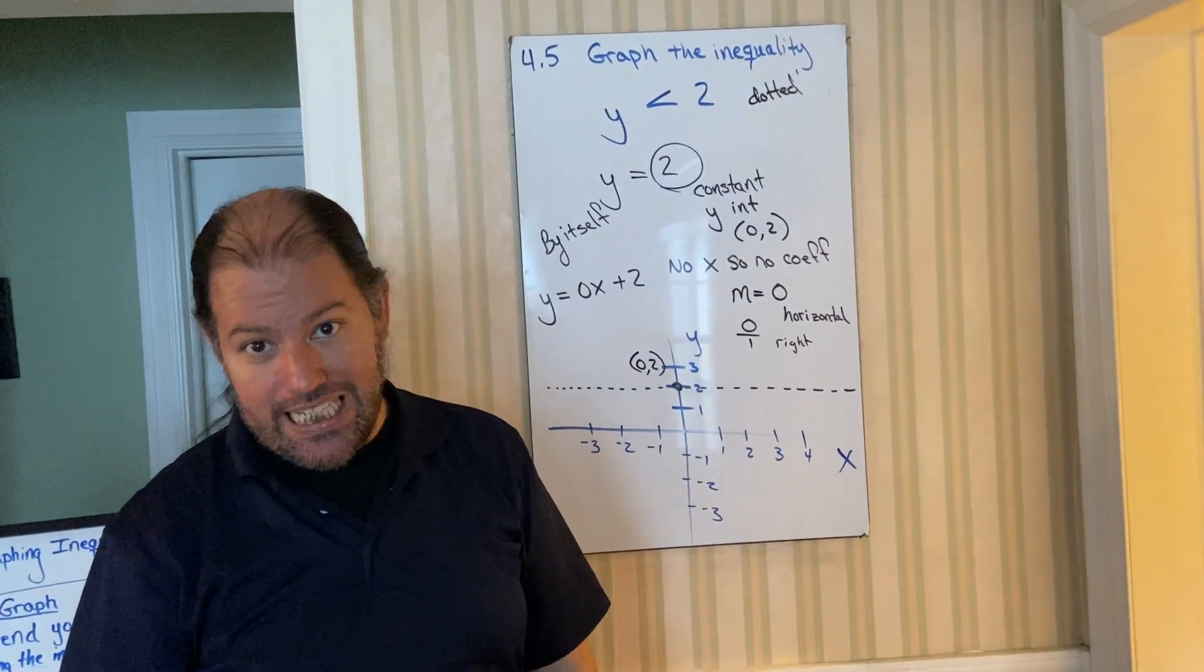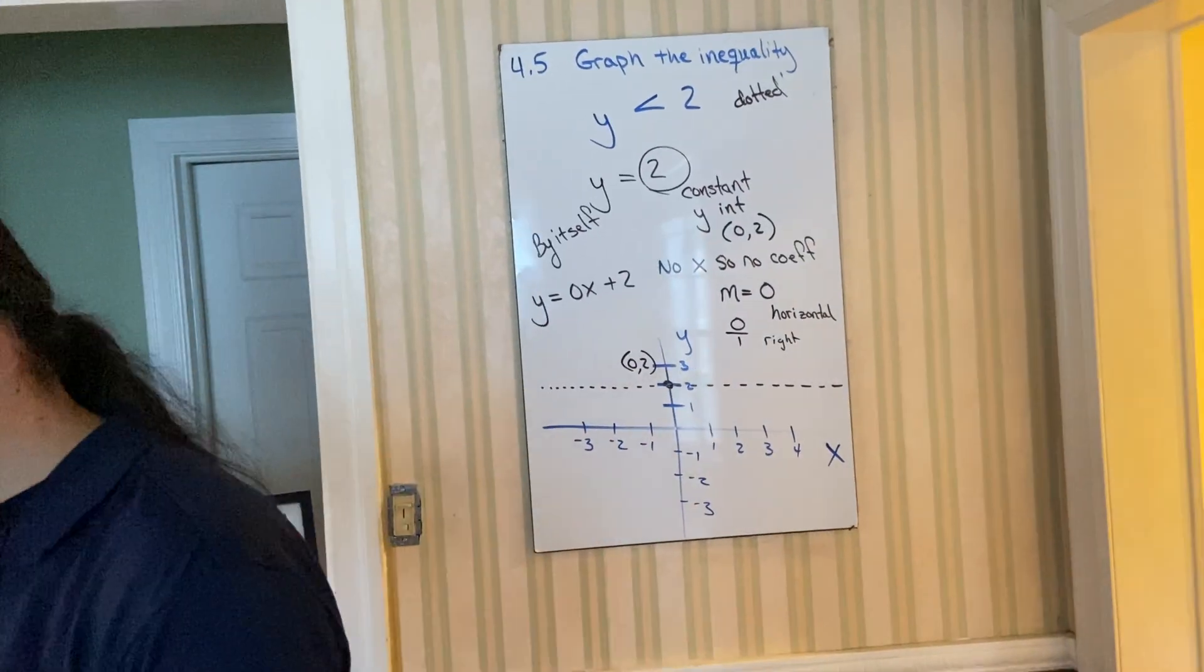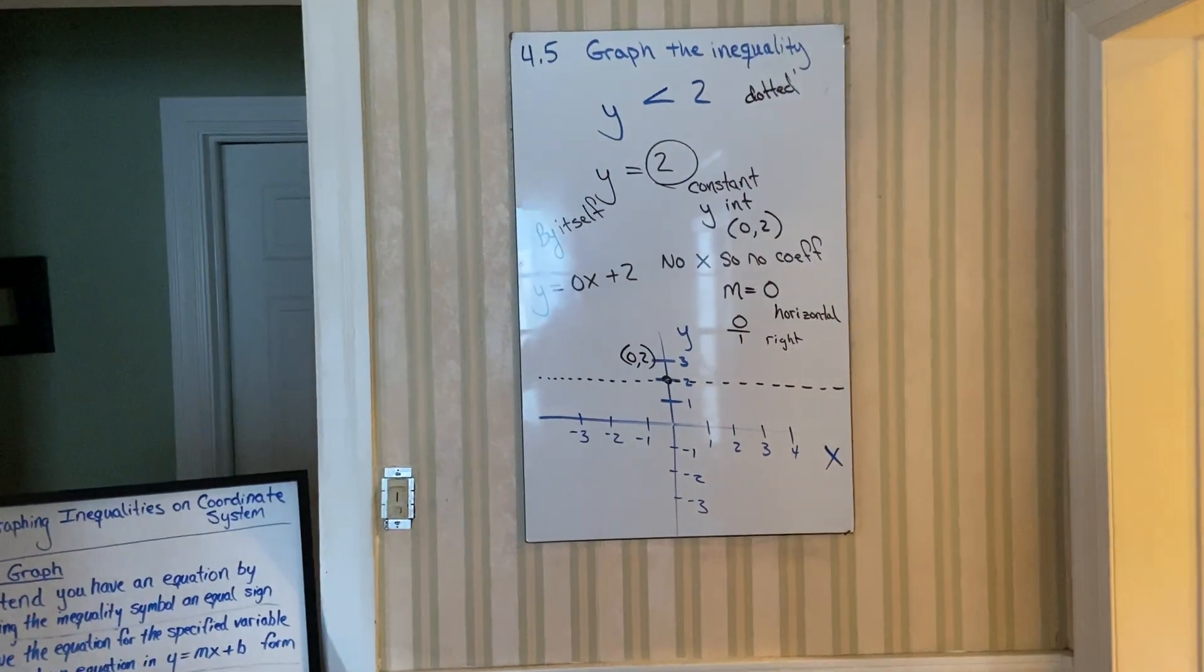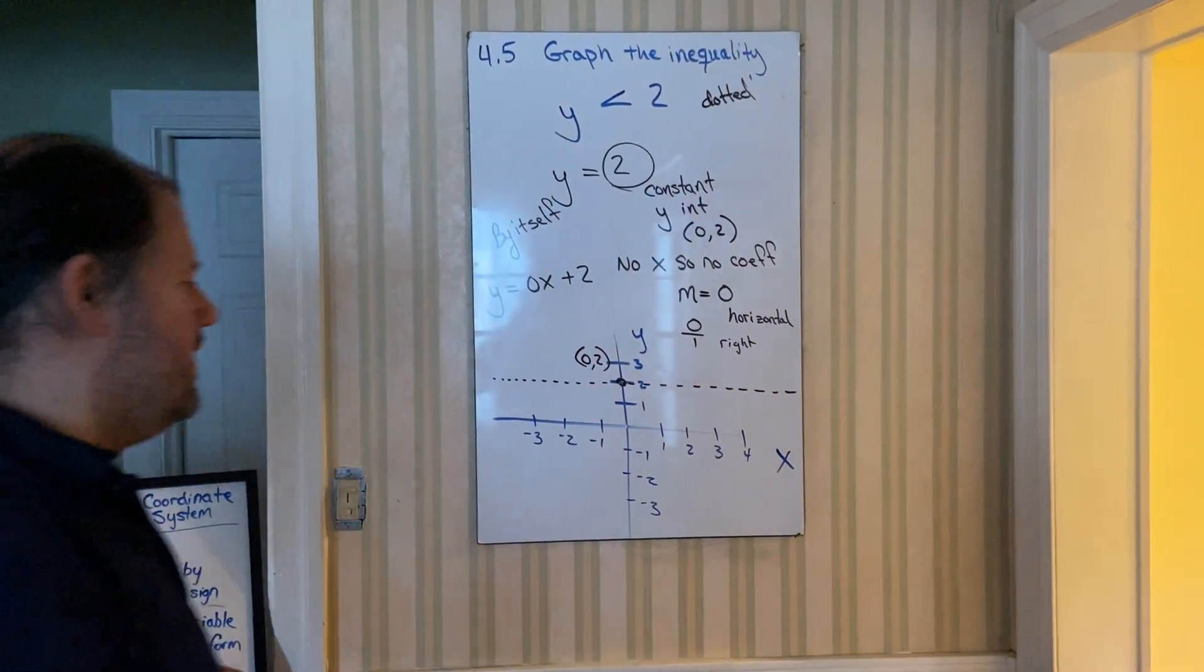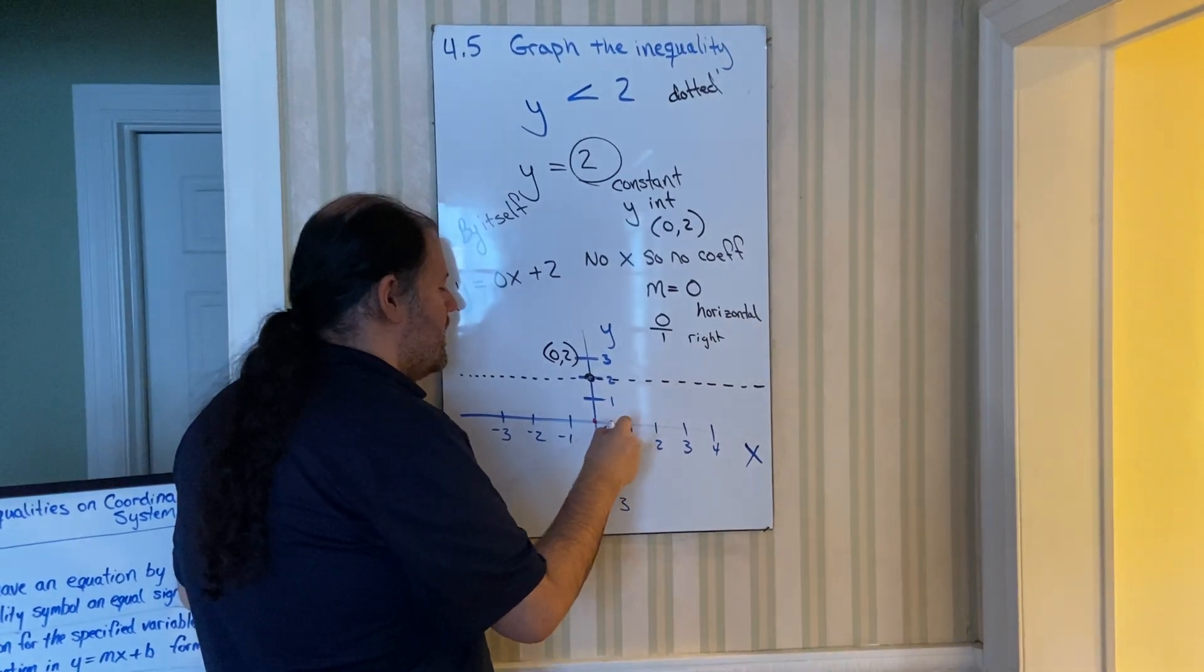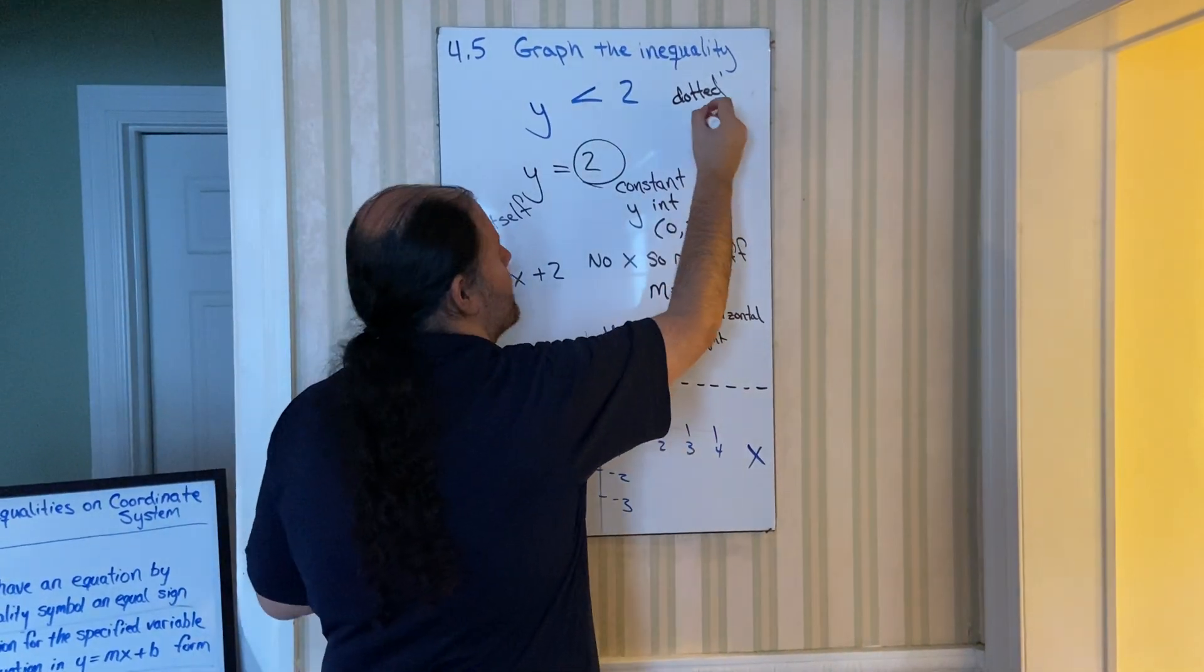Almost done. We have to do some shading. So to shade, you're going to pick any point that is not on the black boundary line. So, you know, I love my zero, zero. So let's test zero, zero.